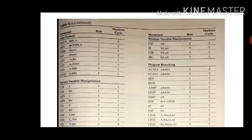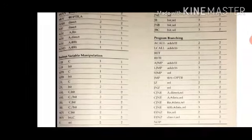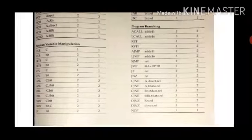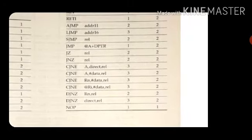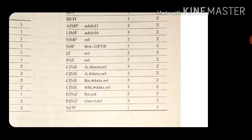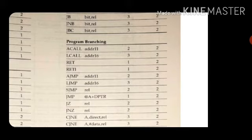There are some more instructions available in 8051 and how many machine cycles they consume is given here. DJNZ will consume two machine cycles — both DJNZ Rn comma REL and DJNZ direct comma REL consume two machine cycles. Comparison instructions also consume two machine cycles. RET also consumes two machine cycles.